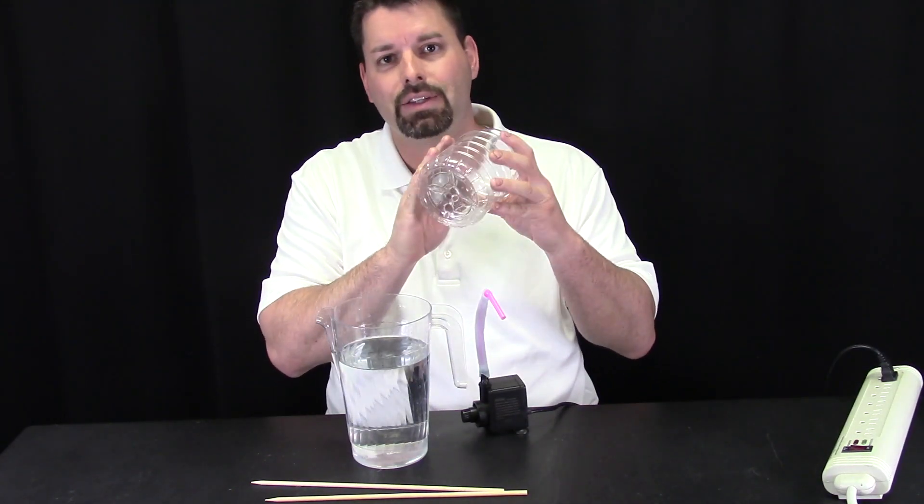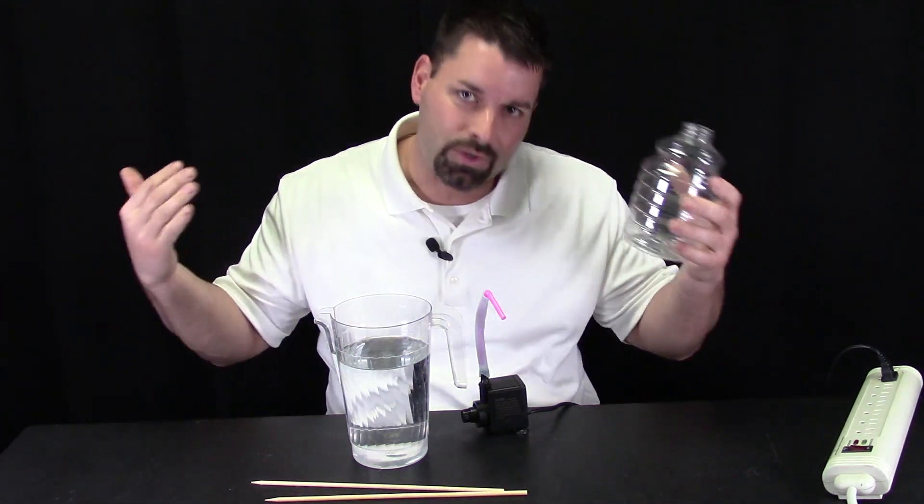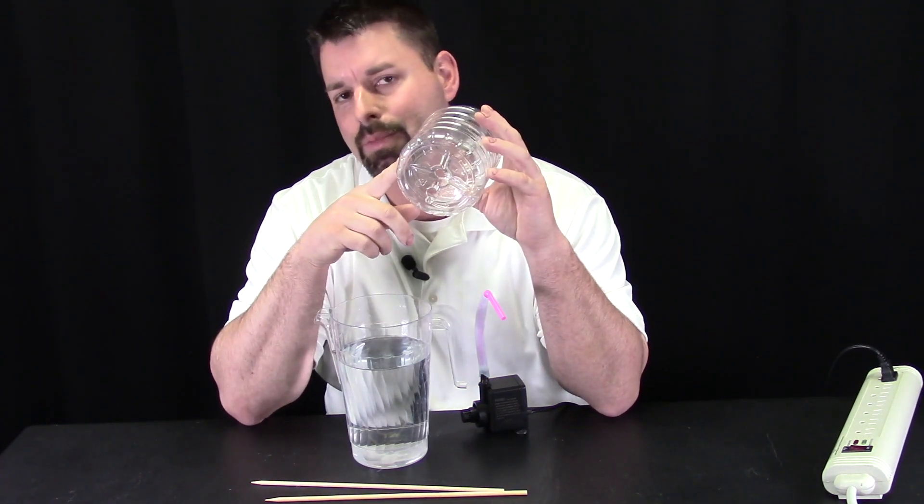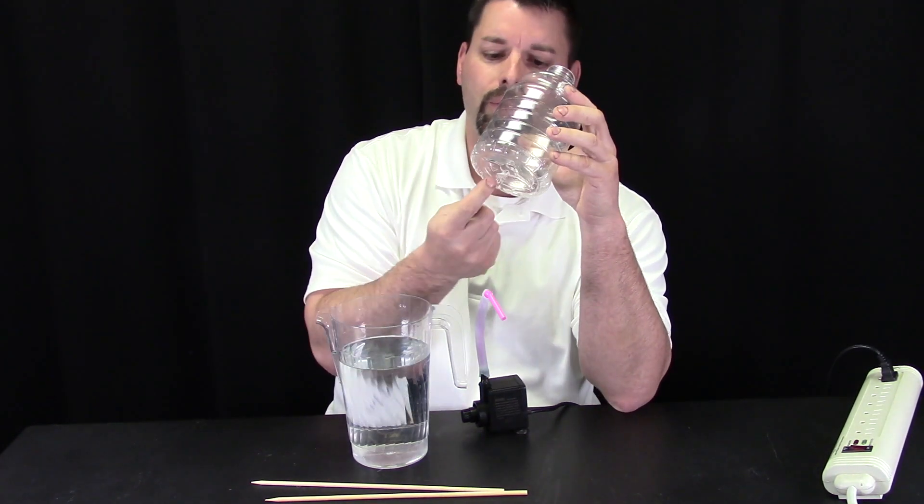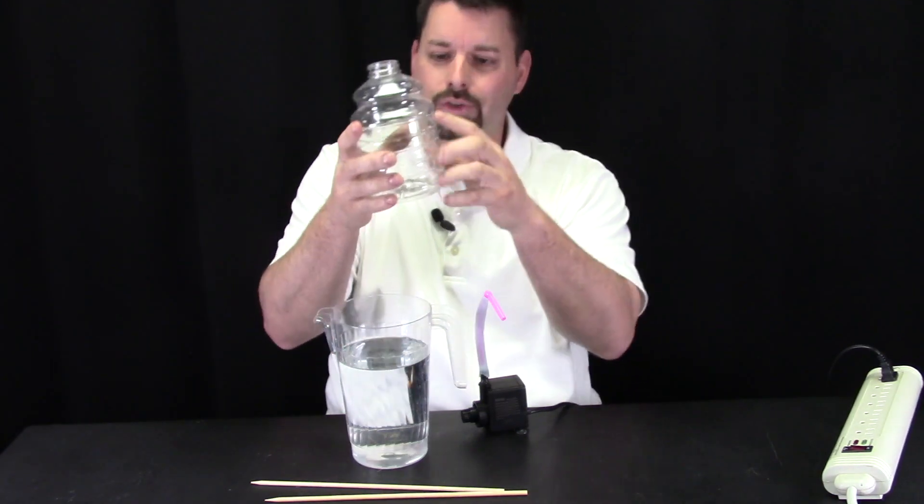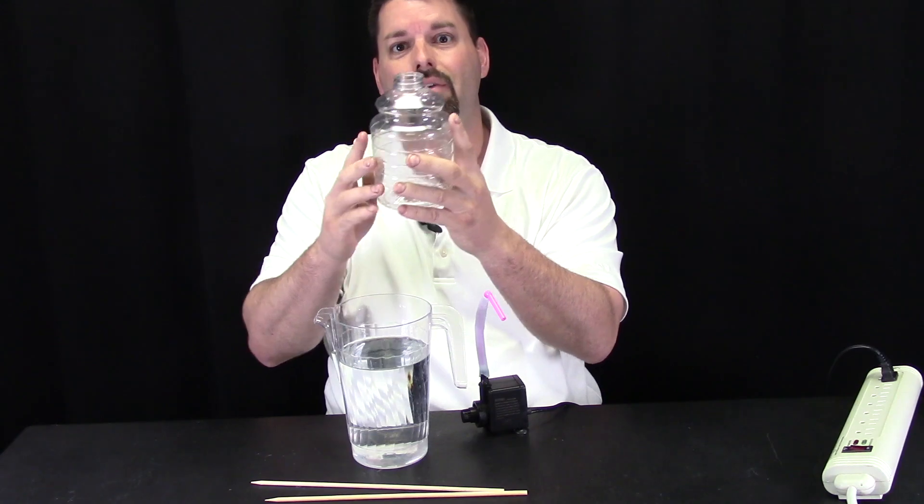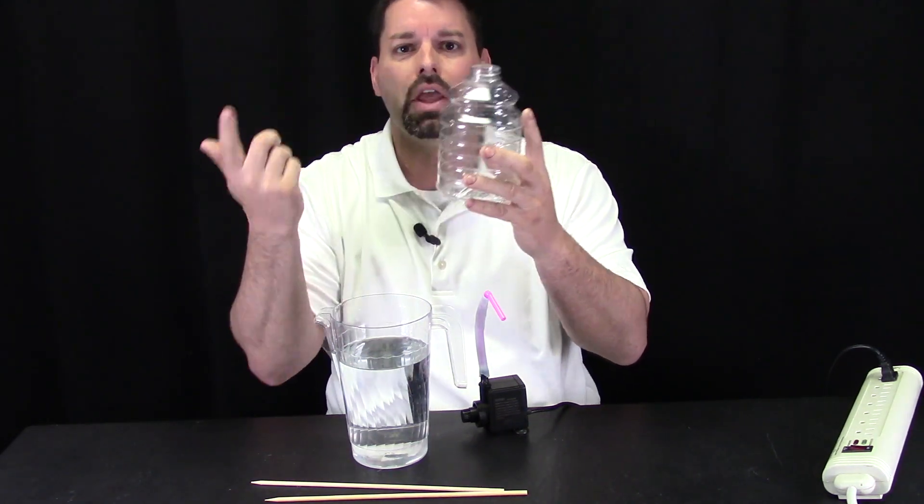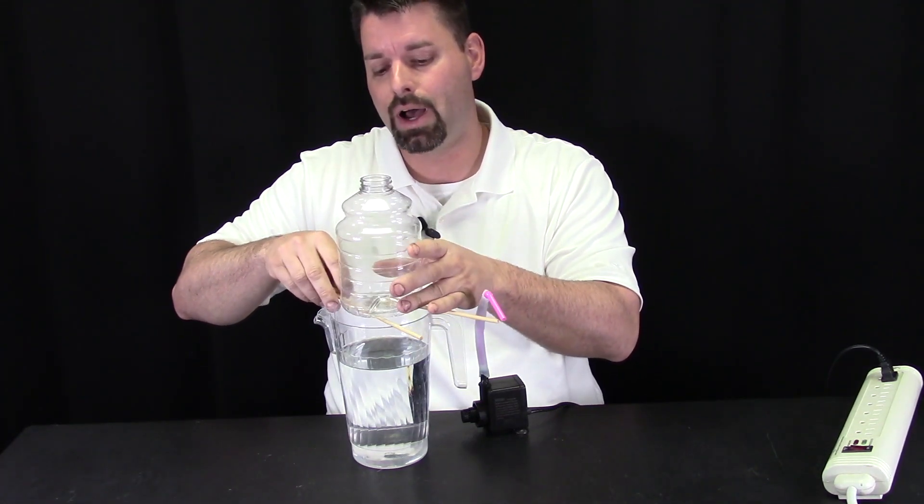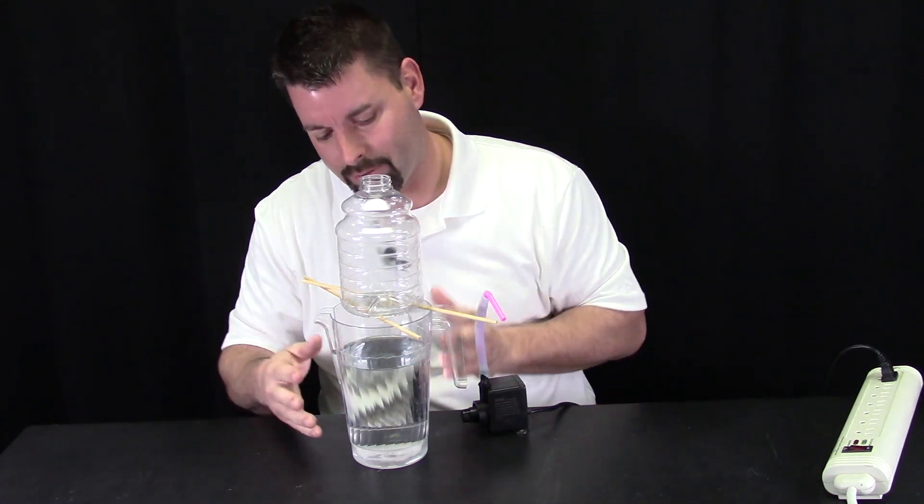And now I need an empty plastic bottle. We wanted something clear so you can see through it, and we drilled two holes in the bottom of the bottle. One, the tubing is going to go through the one hole, and the other hole is going to be a drain hole which allows the water to drain out of the bottle, hopefully creating our liquid tornado. The skewers, well they're just going to make sure our bottle sits on top of our container.